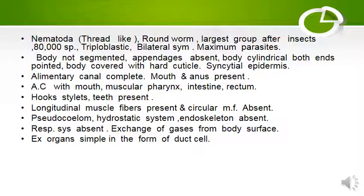The alimentary canal has mouth, muscular pharynx, intestine and rectum. Hooks, stylets, and teeth are also present. Longitudinal muscle fibres are present and circular muscle fibres are absent. Pseudocoelom and hydrostatic system are present. Endoskeleton is absent.